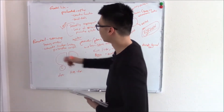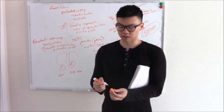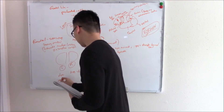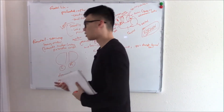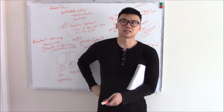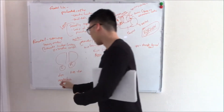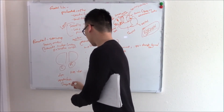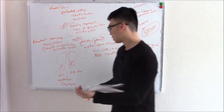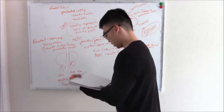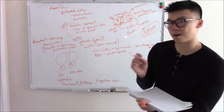Lesions on the left — your dominant hemisphere — will affect the ability to integrate numbers and writing. You won't be able to write, which we call agraphia, and you won't be able to do math, called acalculia. You can also see finger agnosia — you can't sense which finger is being touched — and left-right dissociation. All of this together is called Gerstmann syndrome, due to a problem in your dominant parietal lobe.